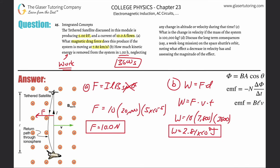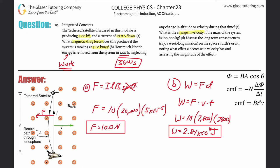That's the energy removed — letter b done. Now letter c: what is the change in velocity if the mass of the system is 100,000 kilograms? We know kinetic energy is related to velocity via KE = ½mv². We might be quick to say ΔKE is a function of Δv squared, but that's wrong — you can't just square the change in velocity.